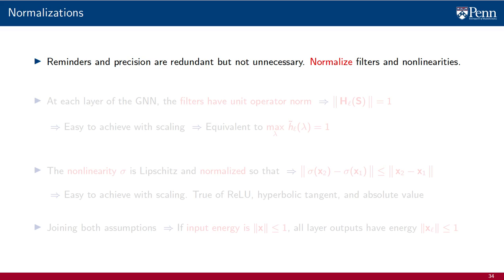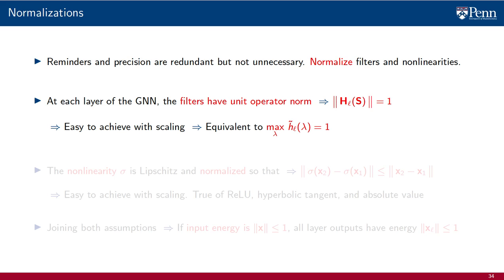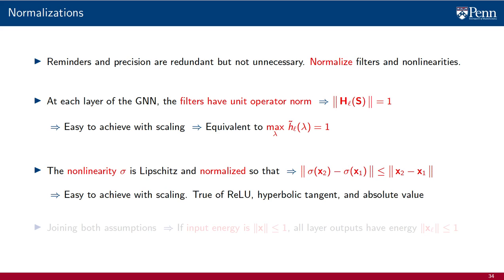We begin with a recollection of the normalizations of filters and pointwise nonlinearities. Our first assumption is that filters have unit operator norm at all layers, something that is equivalent to having the maximum value of the frequency response normalized to 1. We further assume that the nonlinearity sigma is Lipschitz, with its Lipschitz constant normalized to 1. It is worth recalling that standard nonlinearities do verify this assumption. Both assumptions together imply that all layer outputs have subunit energy if the input of the GNN has subunit energy, since neither the filters nor the nonlinearities amplify the energy.